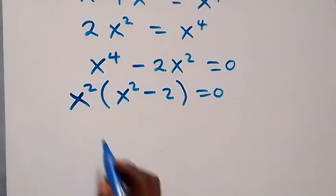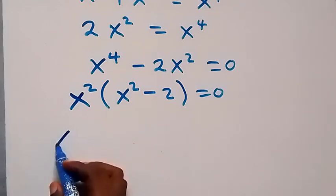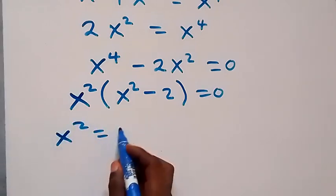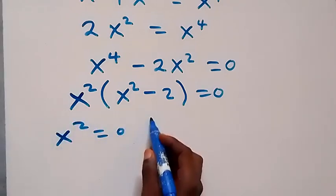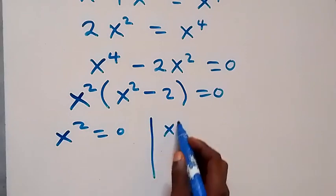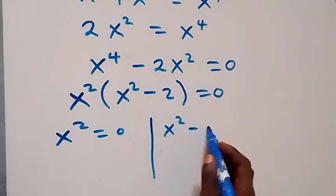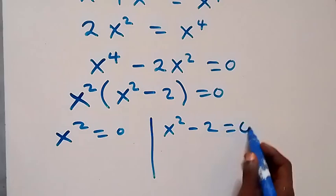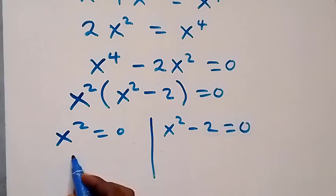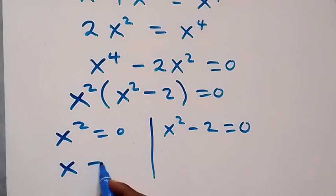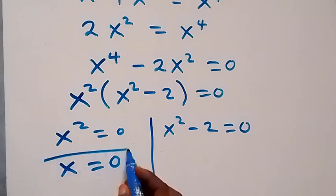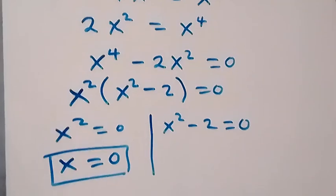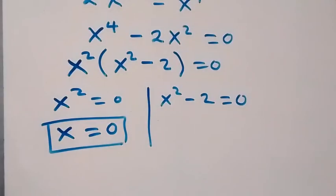We now have two cases: x squared equals 0, or x squared minus 2 equals 0. From the first case, taking the square root of both sides gives x equals 0, so one of the values of x is 0.